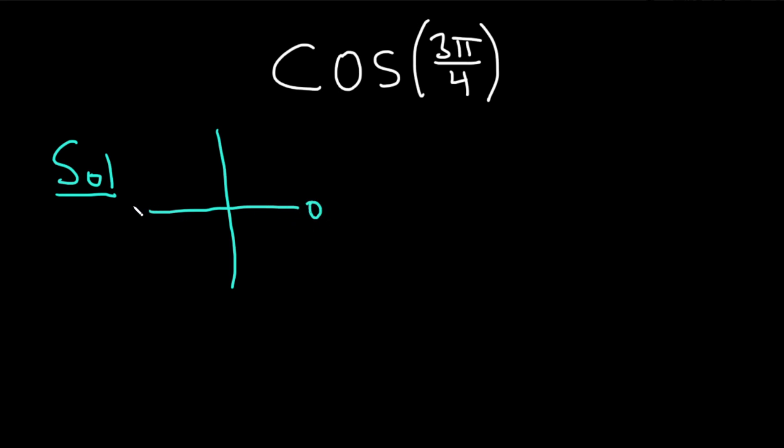So here's 0, here's π. You can think of π as 4π/4. That might make it a little bit easier to determine where 3π/4 is. So 3π/4 will be here.